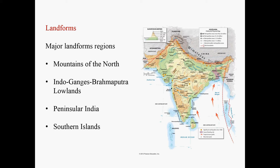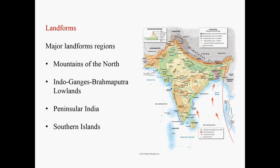Landforms. We can divide South Asia into several major landform regions: mountains of the north, then to the south, southeast, and west of these mountains, you have a vast lowland area — we call it the Indo-Ganges-Brahmaputra Lowlands. Then to the south, you have a triangular region, the entirety of the Indian Peninsula. We call this the Peninsular India. Then you have two island countries, which we call together the southern islands.